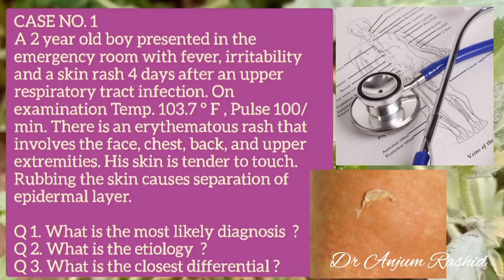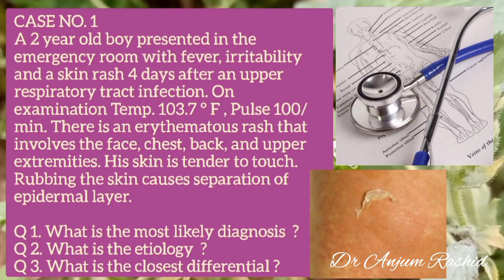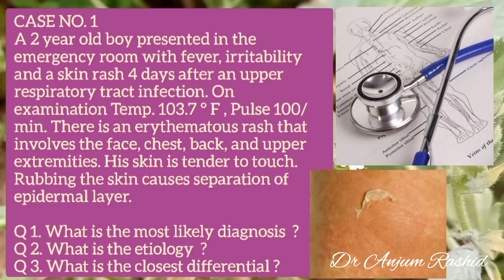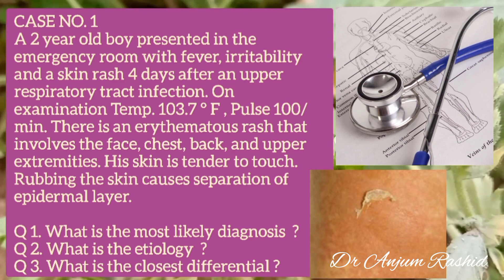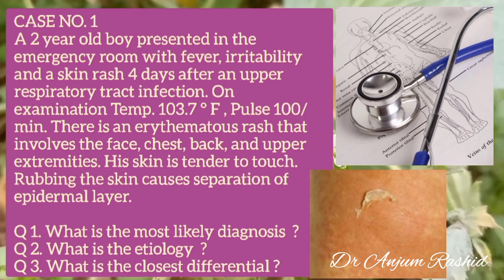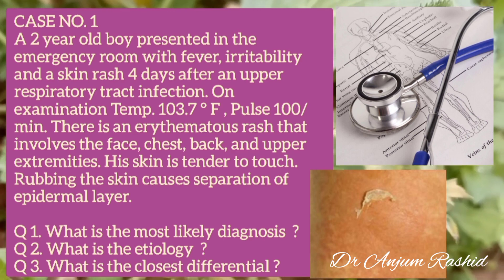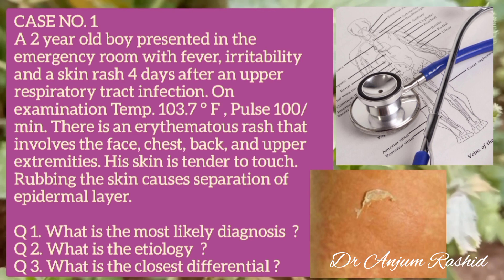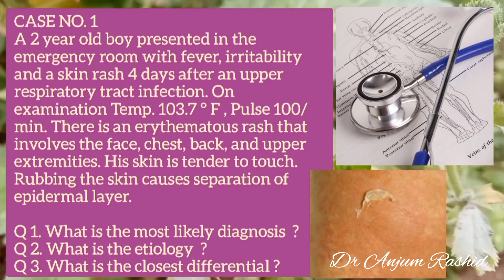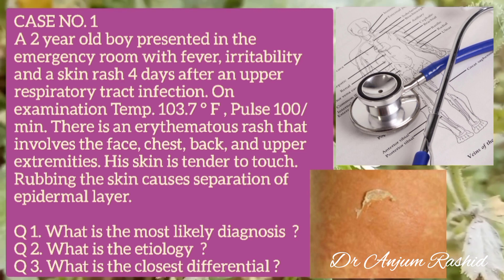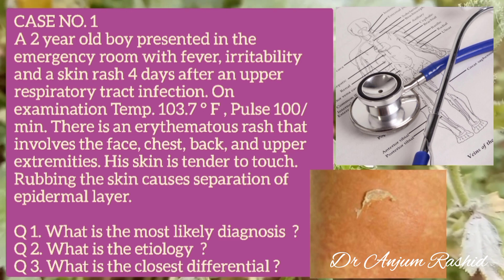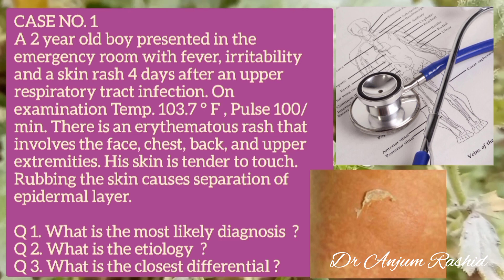I will start with two cases. Case number one is of a two-year-old boy who presented in the emergency room with fever, irritability, and a skin rash four days after an upper respiratory tract infection. On examination, the temperature was 103.7 degrees Fahrenheit, pulse was 100 per minute. There is an erythematous rash that involves the face, chest, back, and upper extremities. His skin is tender to touch and rubbing the skin causes separation of the epidermal layer.